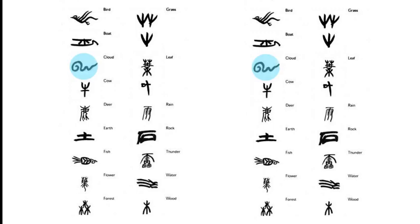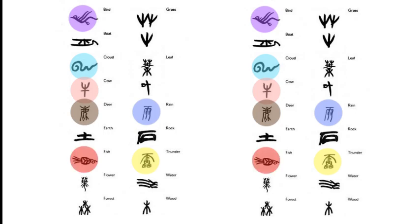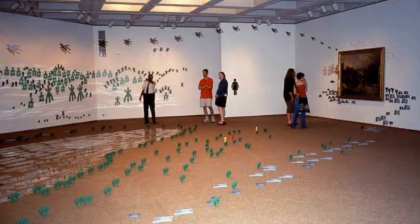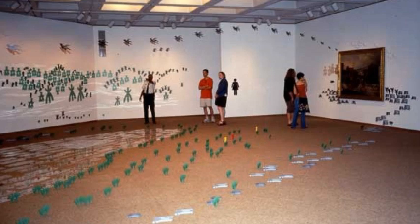The flower symbols stand out the most from all other natural colors. There are also pictographic characters for weather and animals, such as cloud, rain, thunder, bird, cow, deer, fish, and boat. These symbols are mostly in their representational colors, but some color choices are made to let an object differ from its surroundings. For example, the fish character is in vibrant red in the river composed of white water symbols, so it can capture the audience's attention immediately.